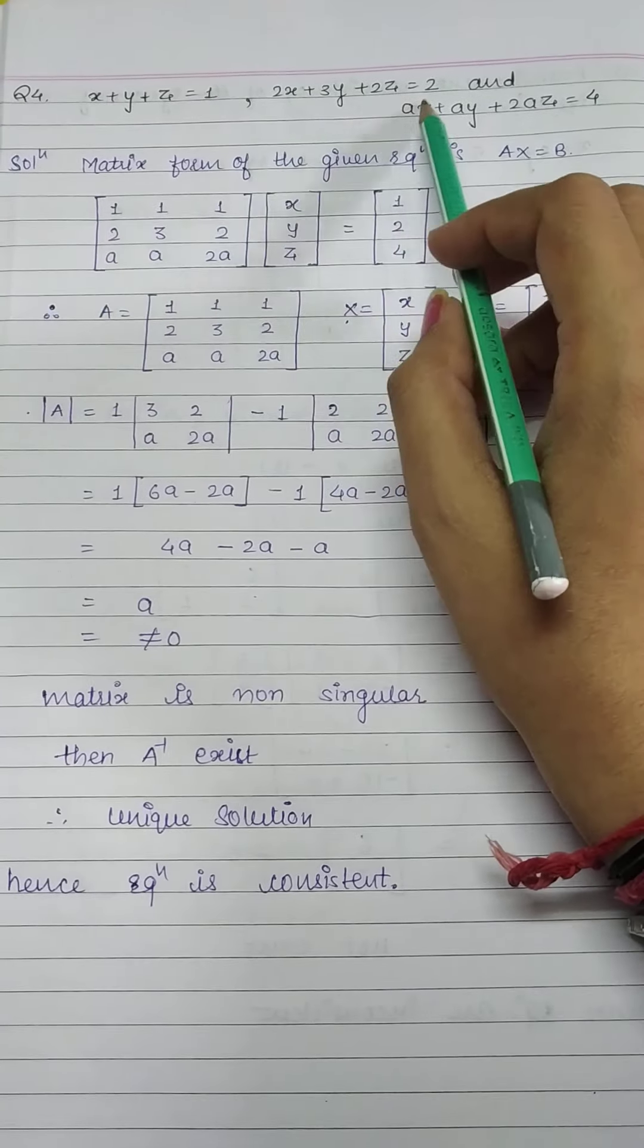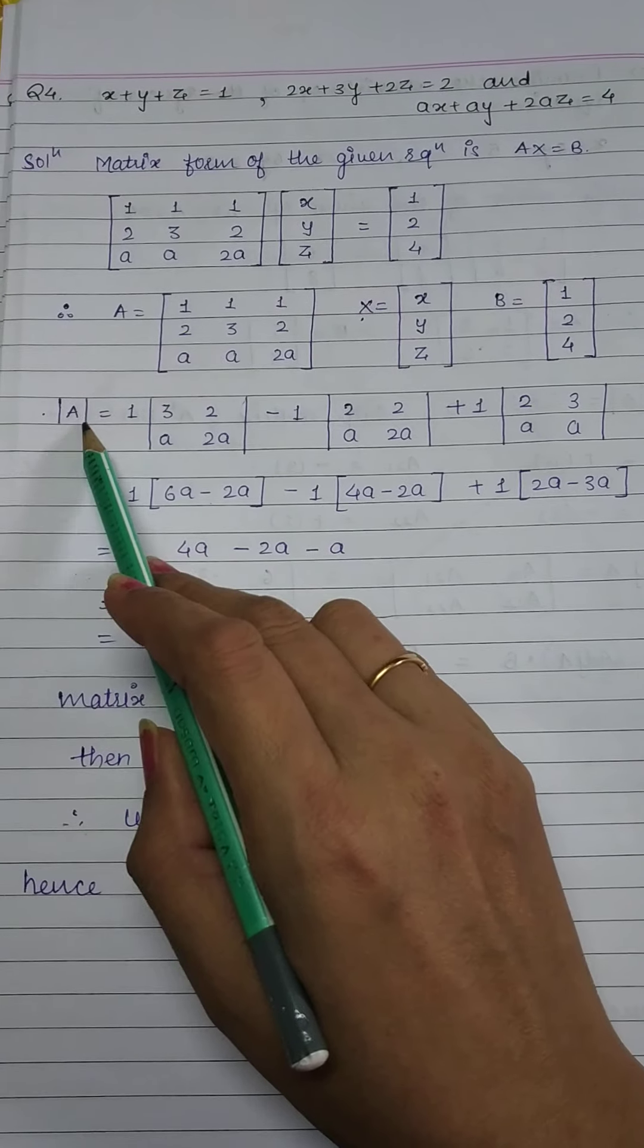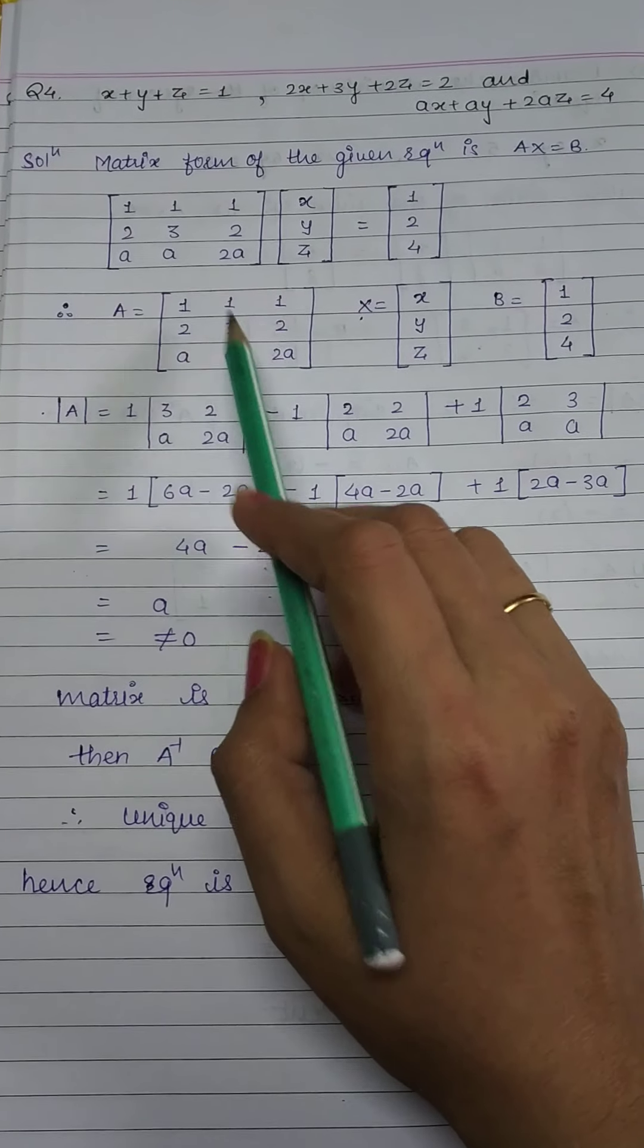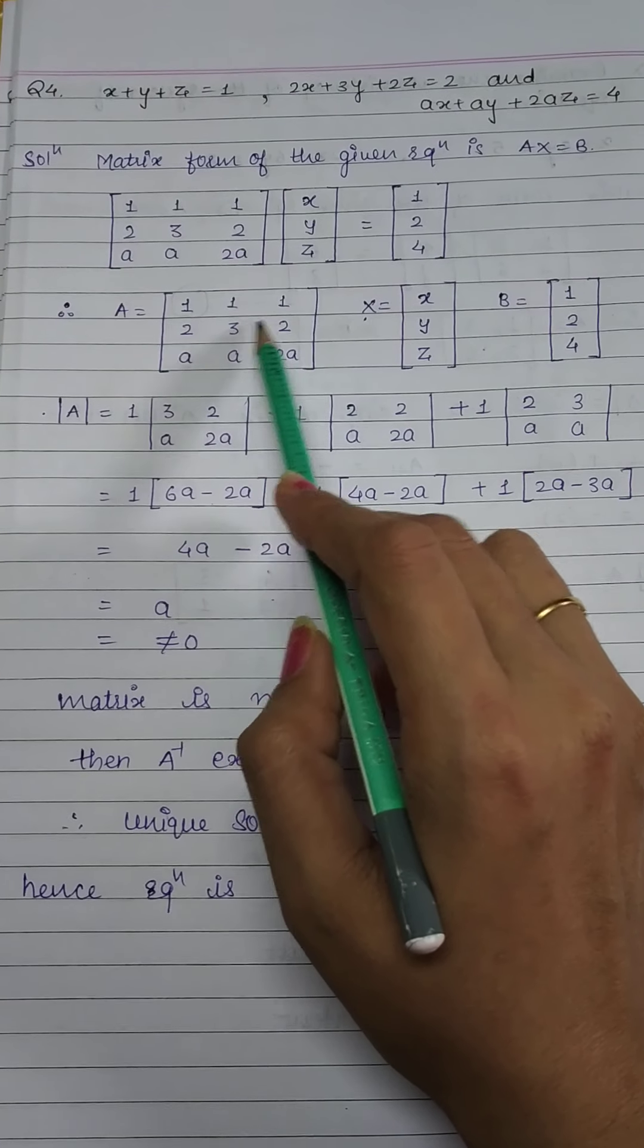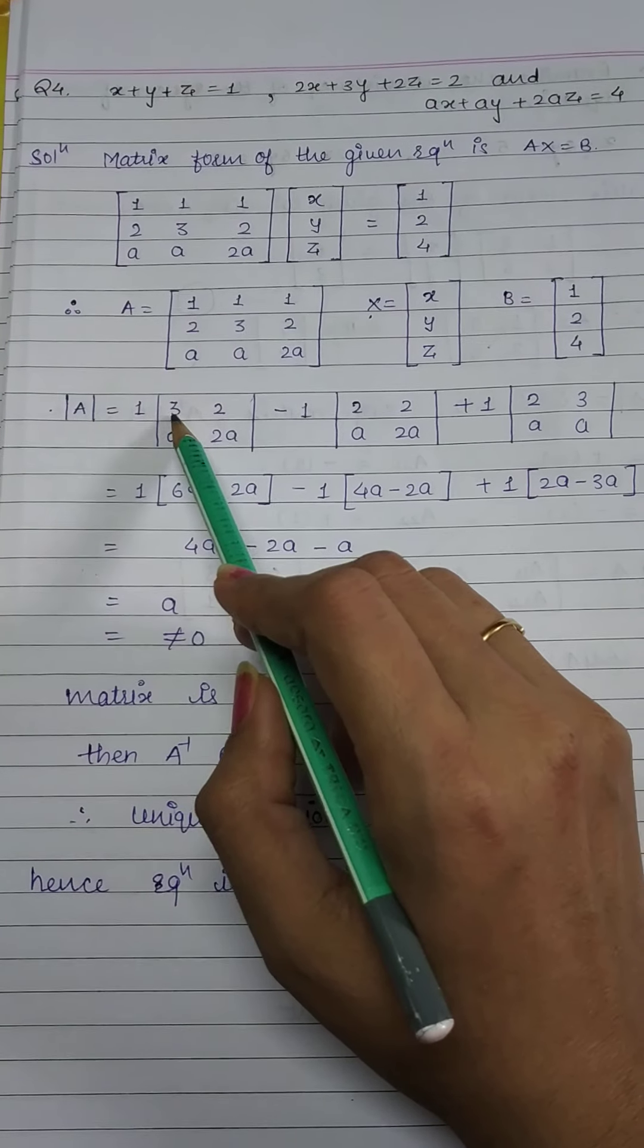Now the equation given is x plus y plus z equals to 1. Second equation is 2x plus 3y plus 2z equals to 2. And the third equation is ax plus ay plus 2az equals to 4. Equation linear form is given.